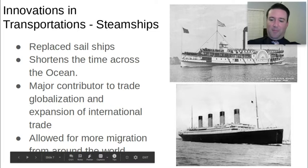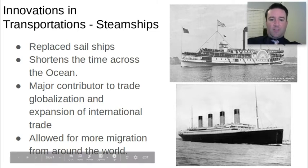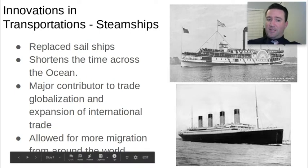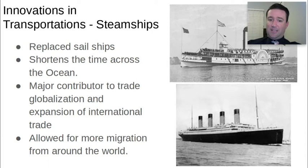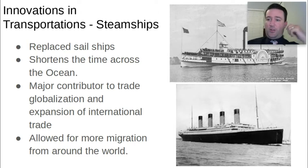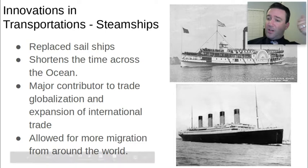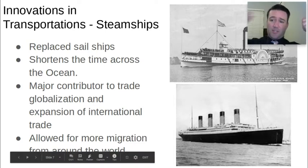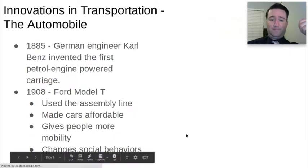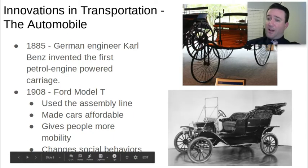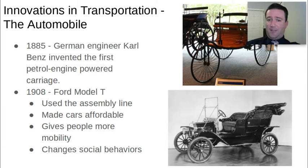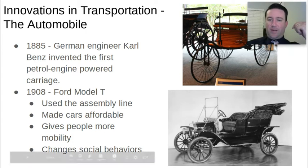The steamship was a major contributor to globalizing international trade. The United States could trade abroad much more easily, both importing and exporting goods. American industrial output relied on getting raw materials from other countries and having overseas markets to sell manufactured goods, and the steamship played a major role in enabling that. Another invention was the automobile — the gas-powered carriage we recognize today was invented by Karl Benz in Germany in 1885.